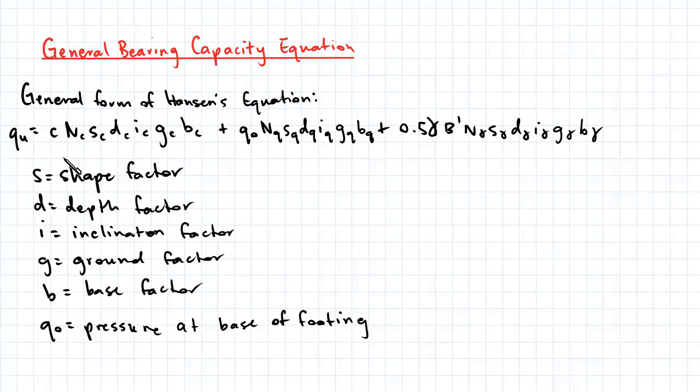C here represents the cohesion of a soil. Qo here represents the pressure experienced at the base of the footing. Gamma represents the unit weight of the soil, and B represents the width of the footing.